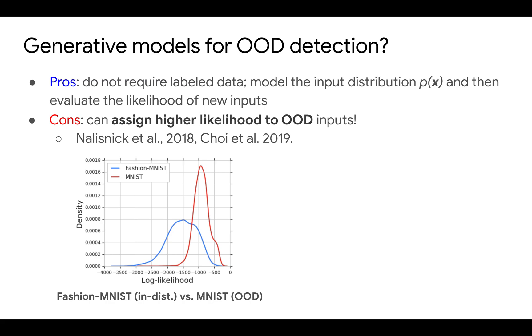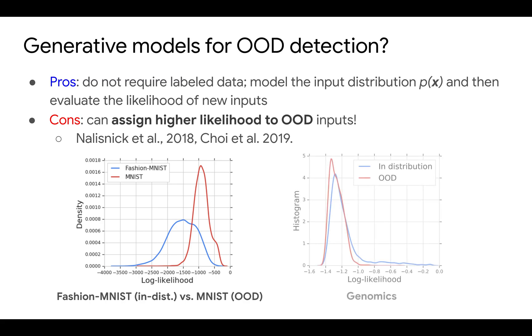For example, a generative model trained for Fashion-MNIST can assign higher likelihood to MNIST. We observe a similar failure mode on genomic data. So why is that?